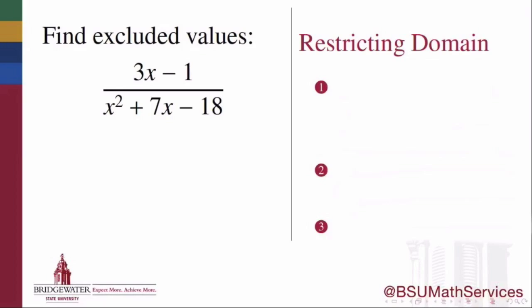In algebra, a rational expression is the result of dividing one polynomial by another polynomial, such as in this example, where we're dividing the polynomial 3x minus 1 by the polynomial x squared plus 7x minus 18. Unlike the other types of expressions we've seen up to this point in our course, a rational expression may not always have a defined value when certain values are plugged in for its variable.